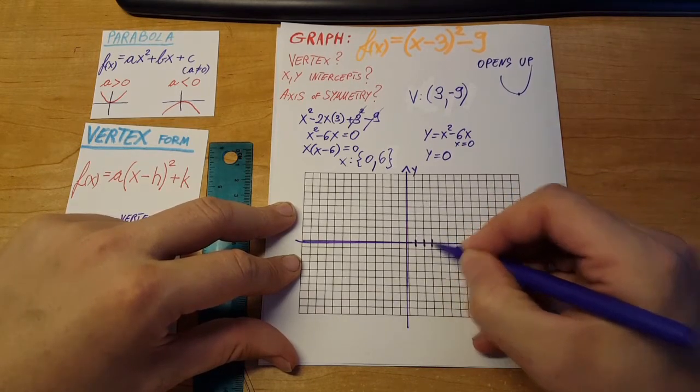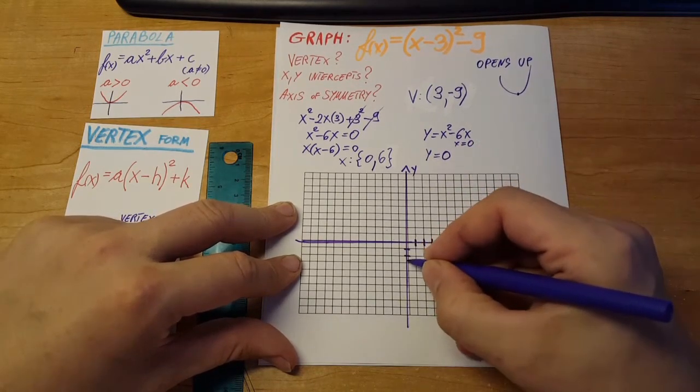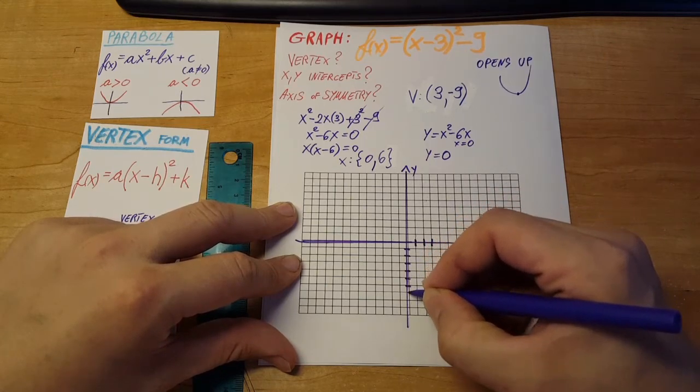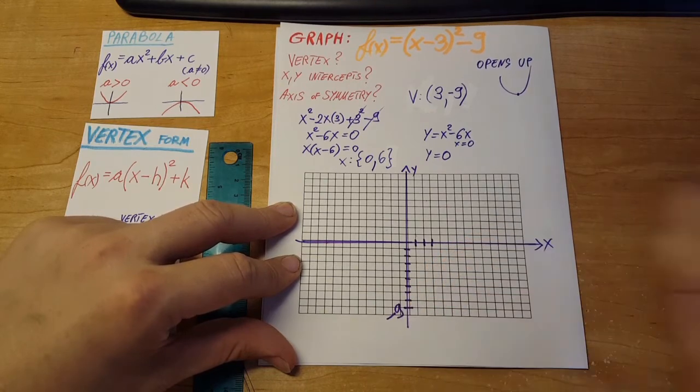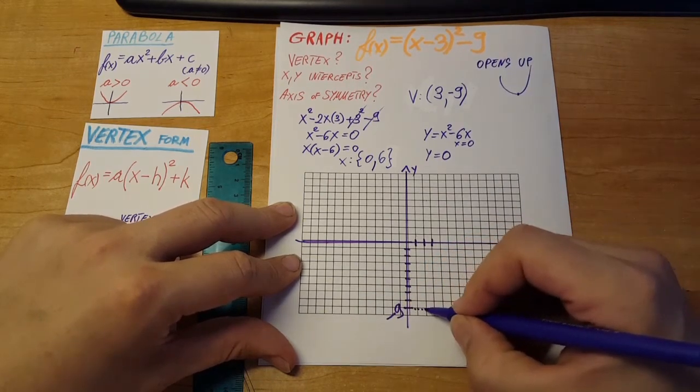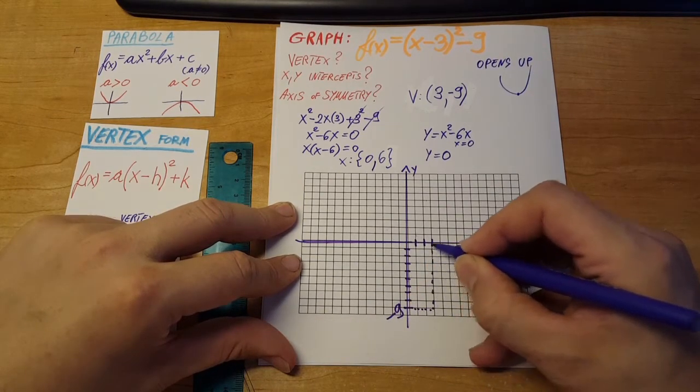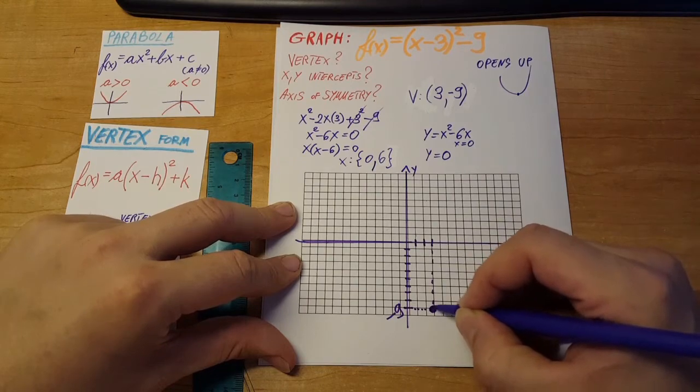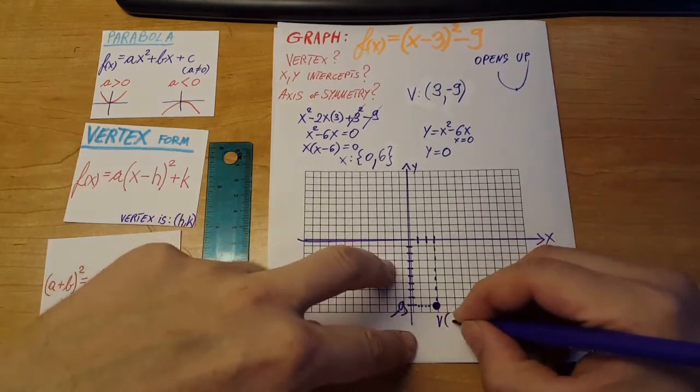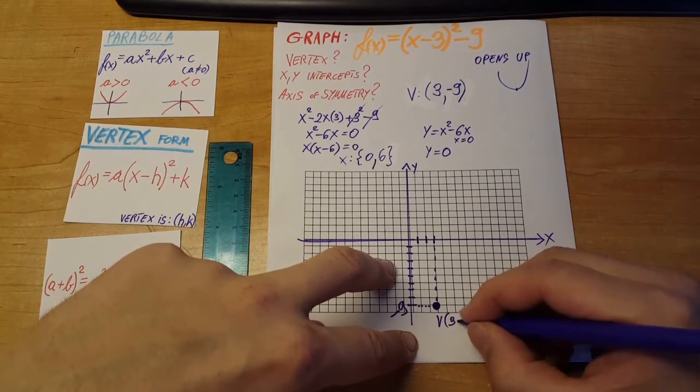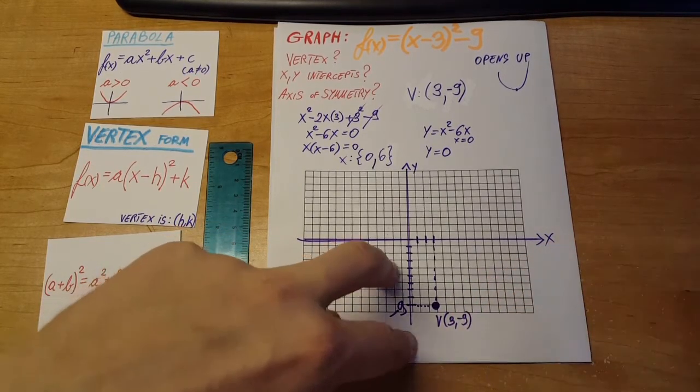1, 2, 3, and negative 9. 1, 2, 3, 4, 5, 6, 7, 8, and this will be our negative 9. There you go, there's our vertex. Let's mark it: 3, negative 9. Ok, we can see that very nicely where it is.